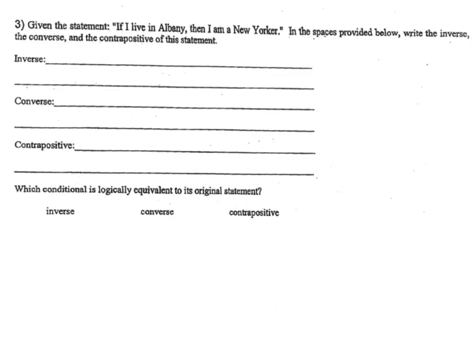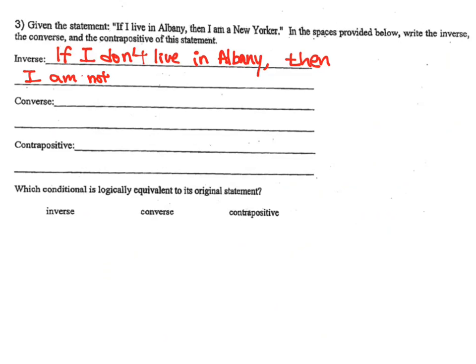Let's look at the next one: 'If I live in Albany, then I am a New Yorker.' The inverse of that — we just have to negate it — so we can write: 'If I don't live in Albany, then I am not a New Yorker.' Whether the statement makes sense or not in your opinion, we have to make sure it is the inverse, which means using 'don't' and 'not.'